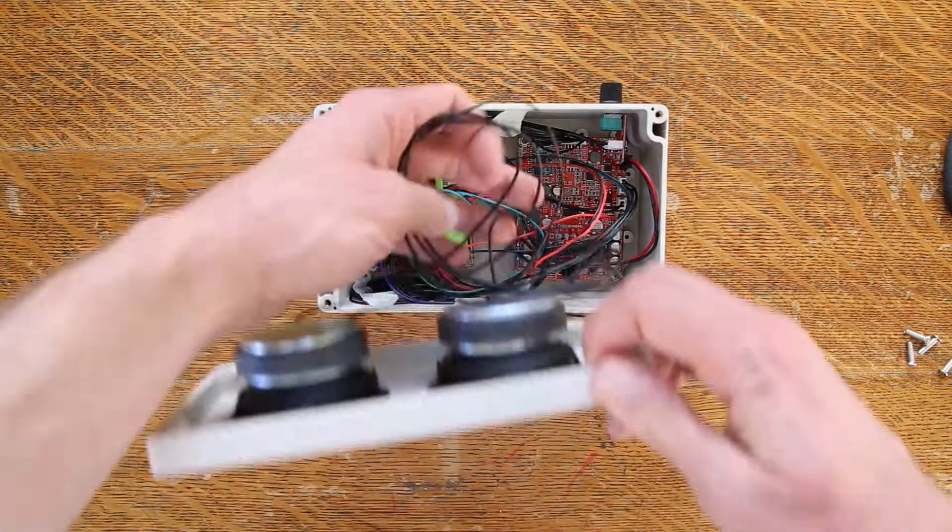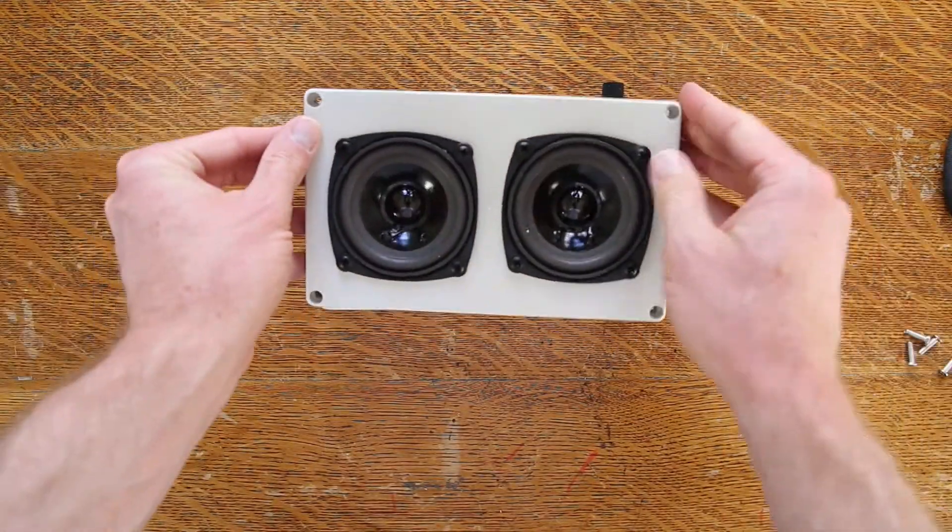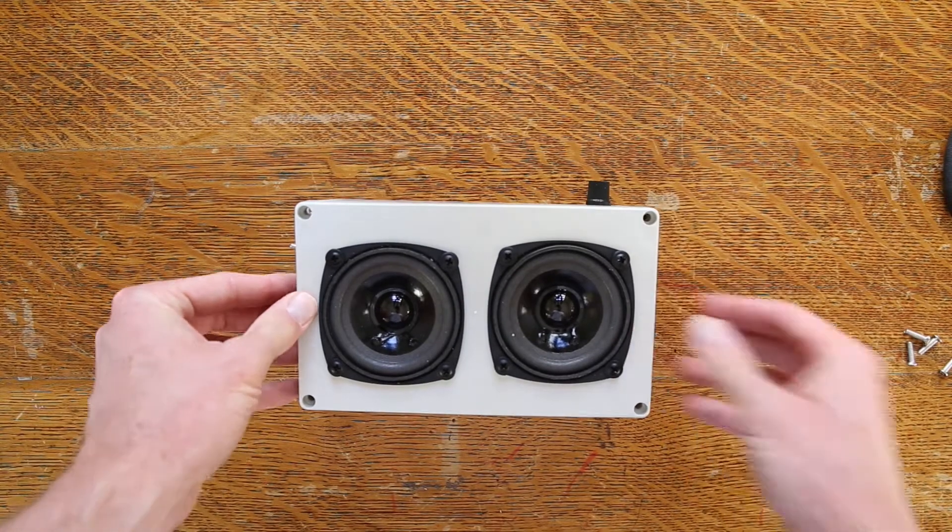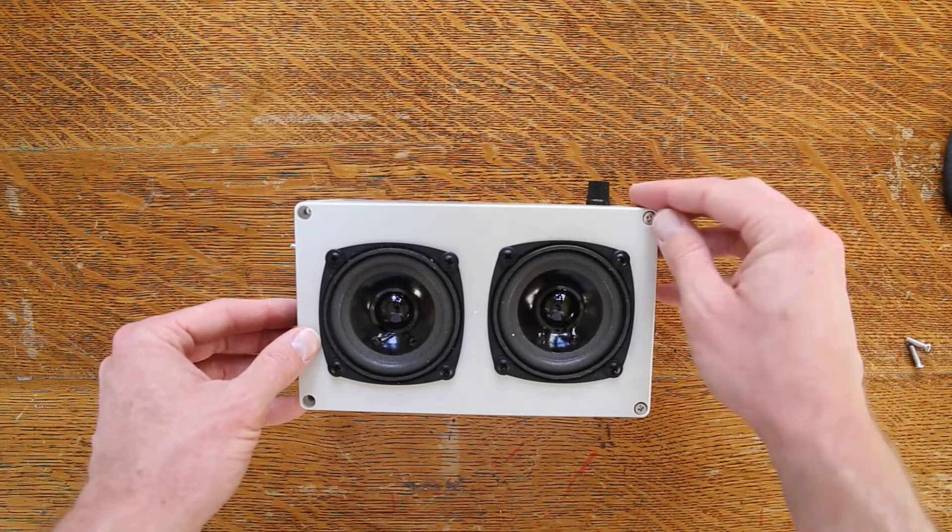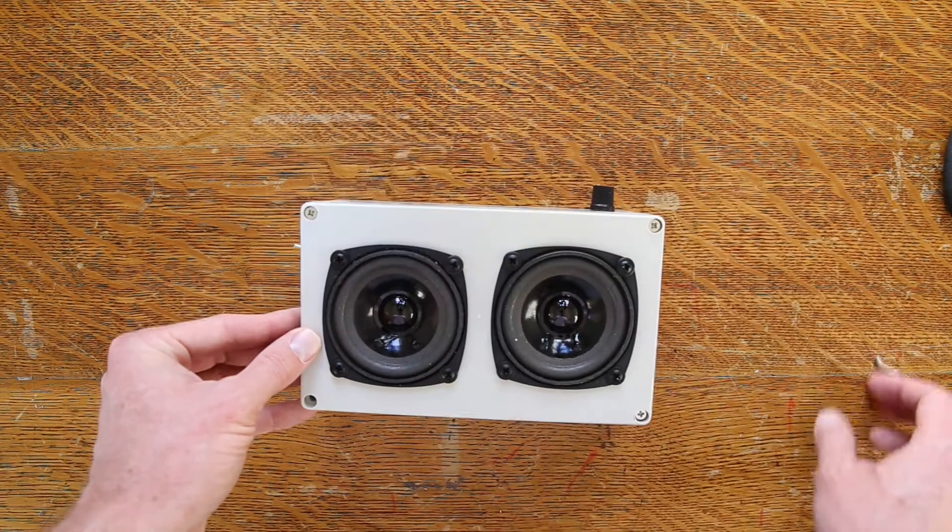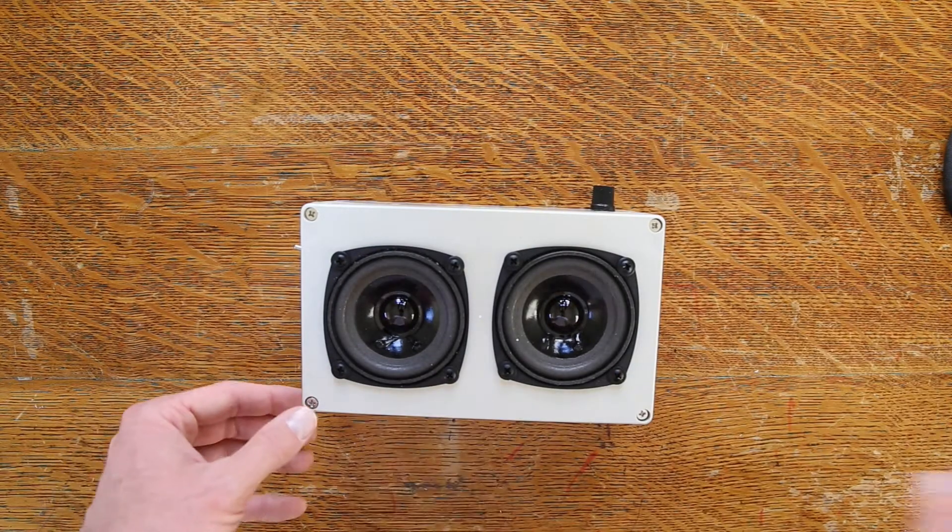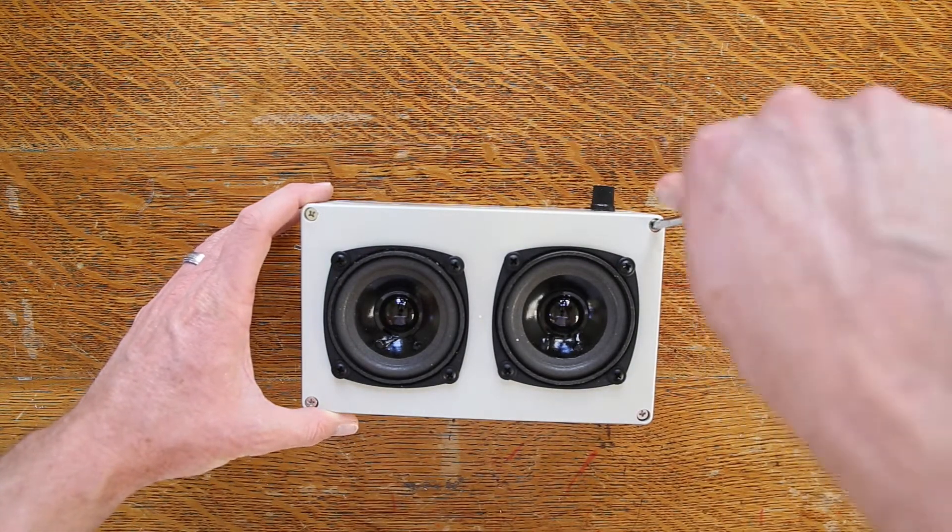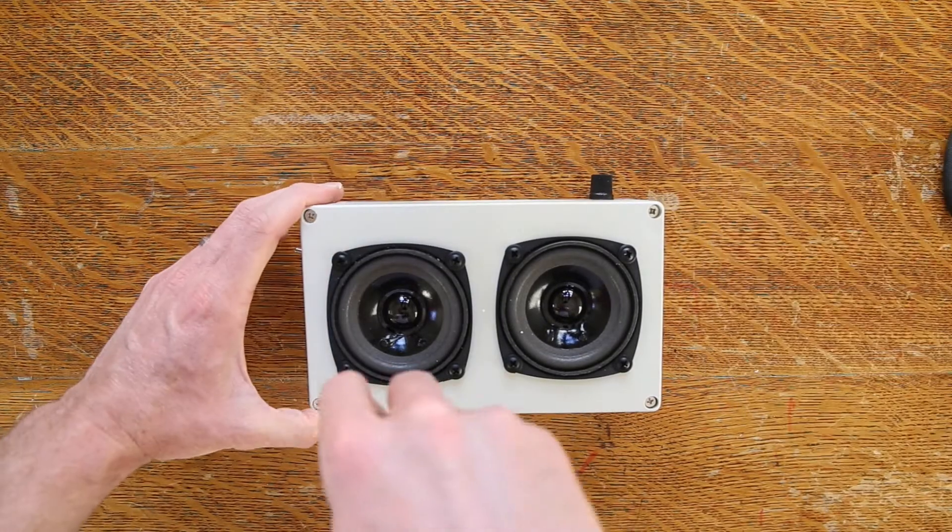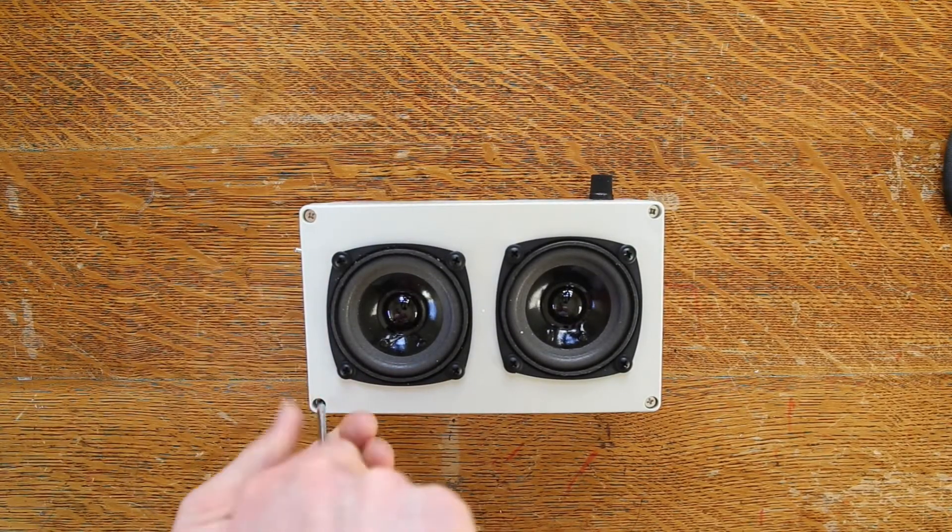Once you have your speaker wires connected, place the enclosure top back on, put the screws in, and screw them down. Watch for any gaps on the sides and make sure you don't have any cables that are sticking out or sticking into there so you can get as nice of a seal as possible.